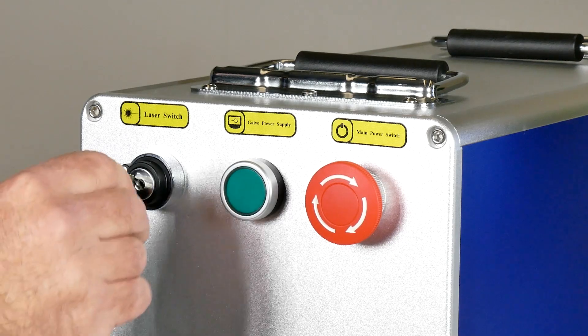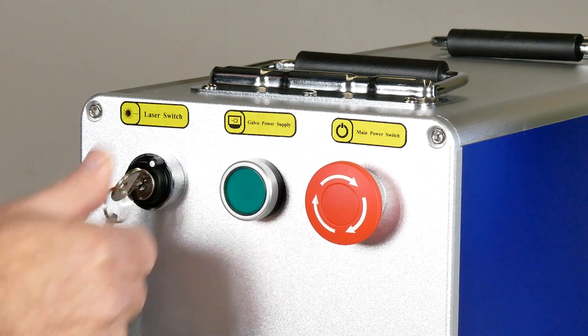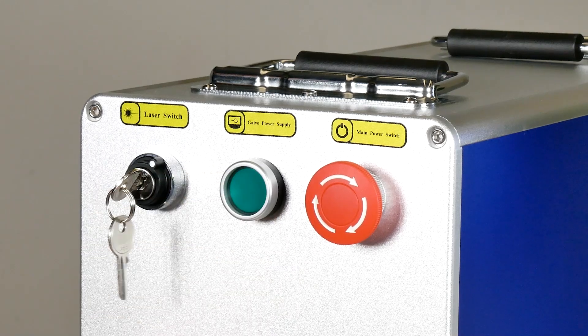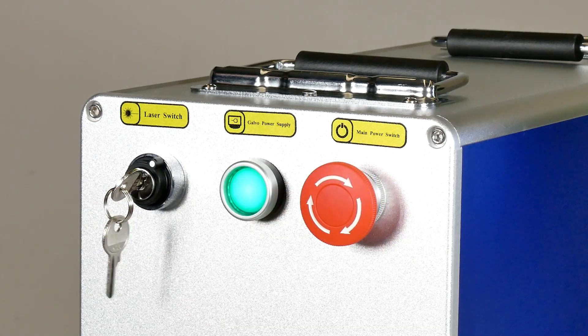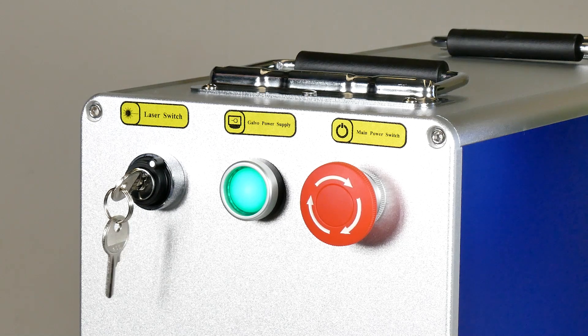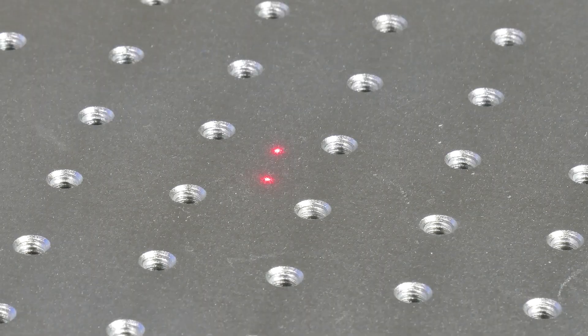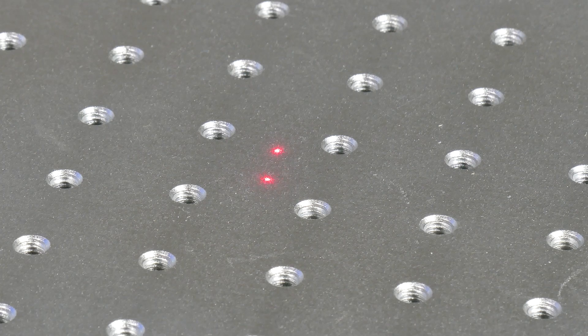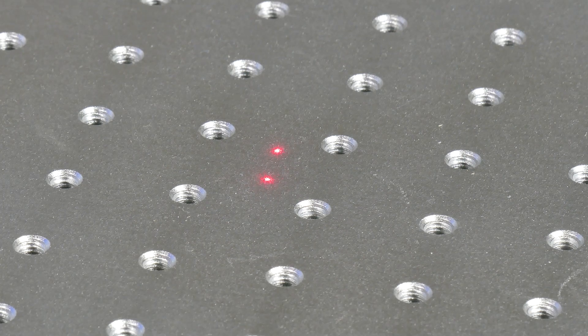There are three steps to turn on the machine. First we need to switch on the laser, then the Galvo power supply, and finally the main power switch. Now if everything's been connected properly you get two little red dots. These are not the laser beams, these are focusing beams.